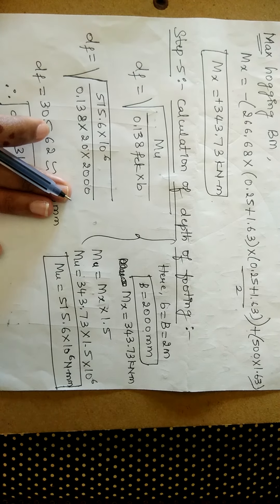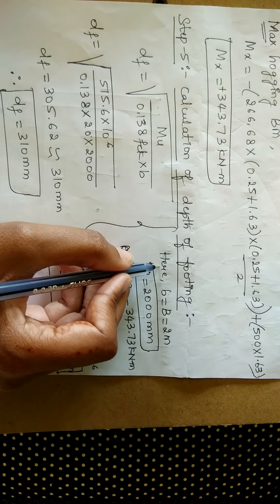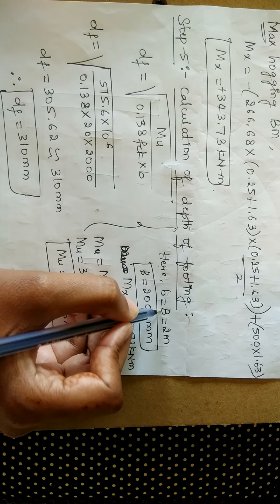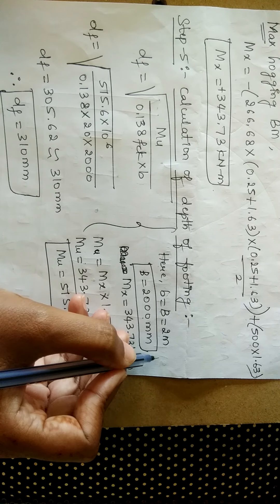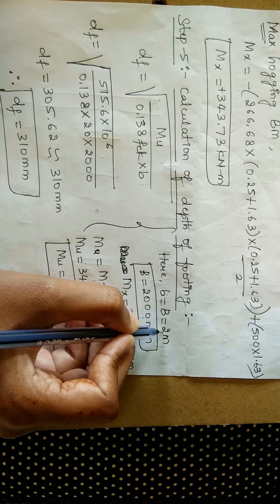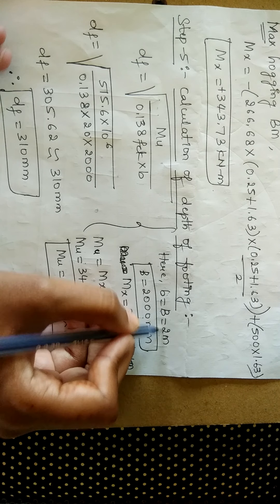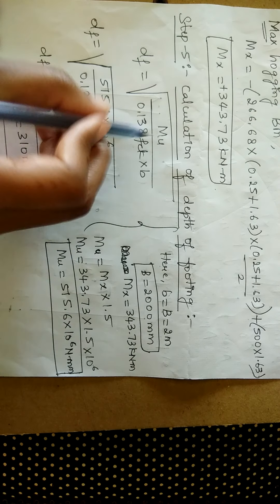we have assumed the width of the footing as 2 meters. If you want, you can write small b equals capital B equals 2 meters. As it is in terms of meters, we need to convert it in terms of mm, for which we multiply 2 with 1000. On multiplying 2 with 1000, we will be getting the value of b as 2000 mm.